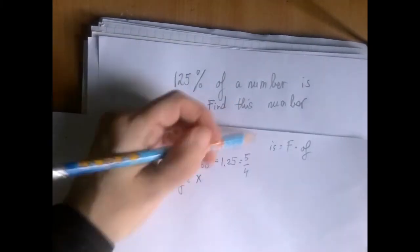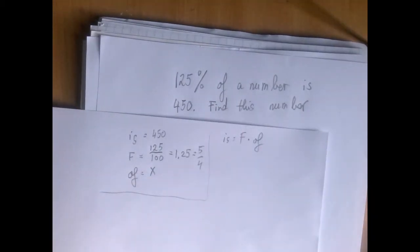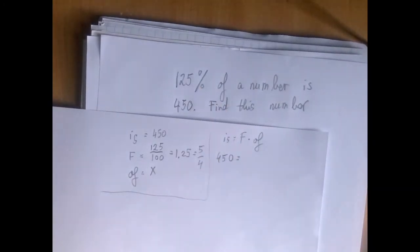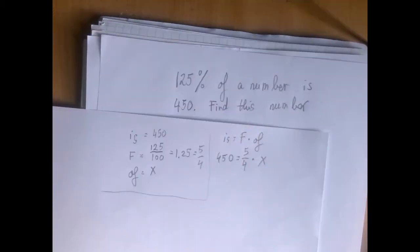So given these characters, the is equals fraction times of will play out as 450 equals to, I'm going to go with the fraction form, 5 over 4 times x. 1.25 would work just as well.